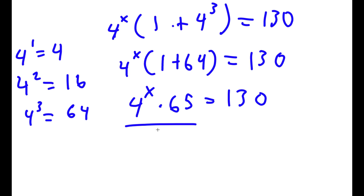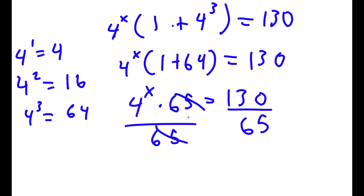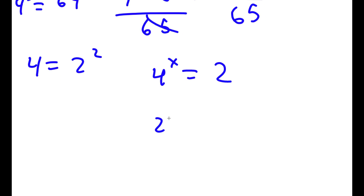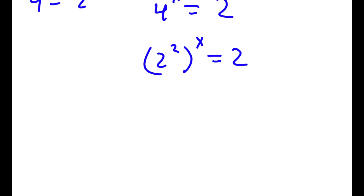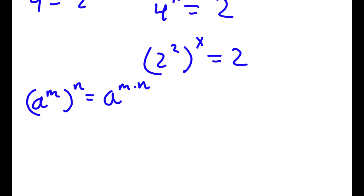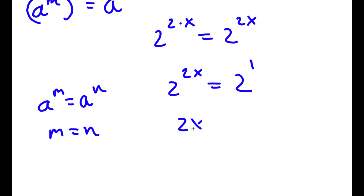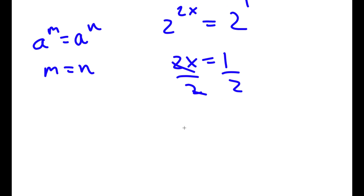Now I want to isolate x, so I'm going to divide both sides by 65 — these two cancel out — and I have 4 to the power of x is equal to 1 over 195. Now, 4 is the same thing as 2 squared. So replacing 4 with 2 squared, we get 2 squared to the power of x is equal to 2. Using the power rule, 2 squared to the power of x equals 2 to the power of 2x. Since 2 equals 2 to the power of 1, and if a to the power of m equals a to the power of n then m equals n, we get 2x is equal to 1. Dividing both sides by 2, x is equal to 1 half.